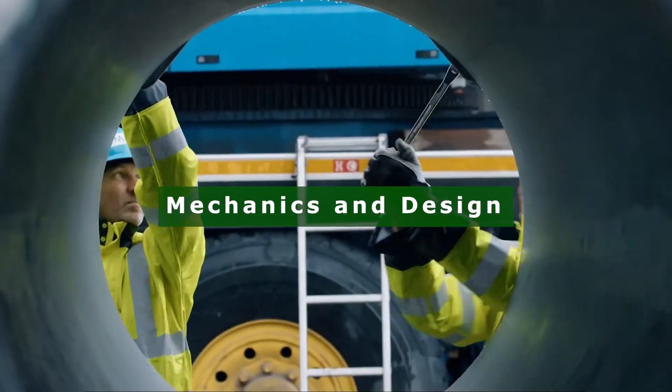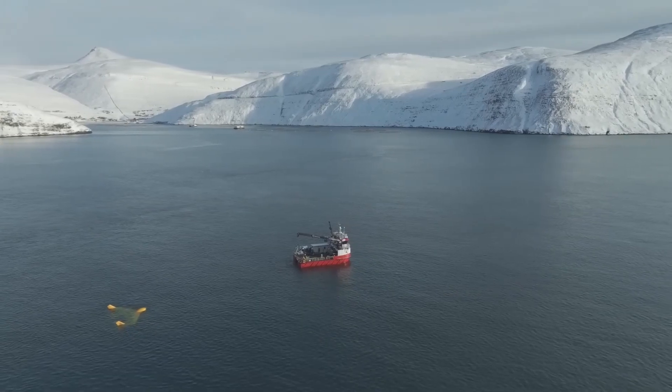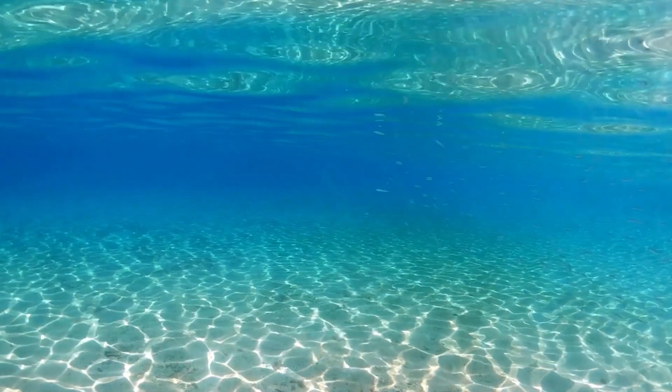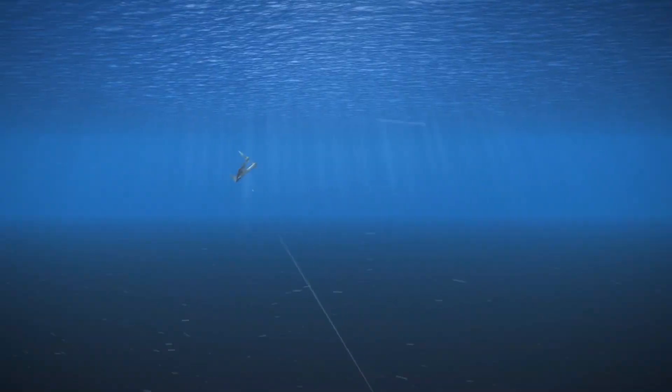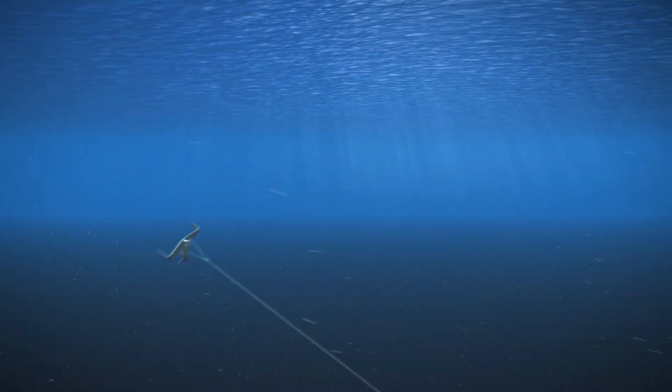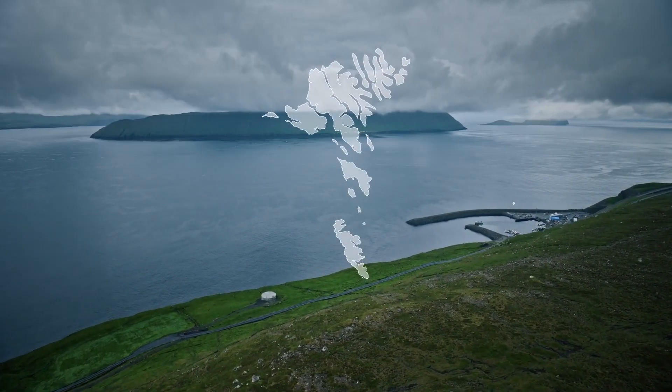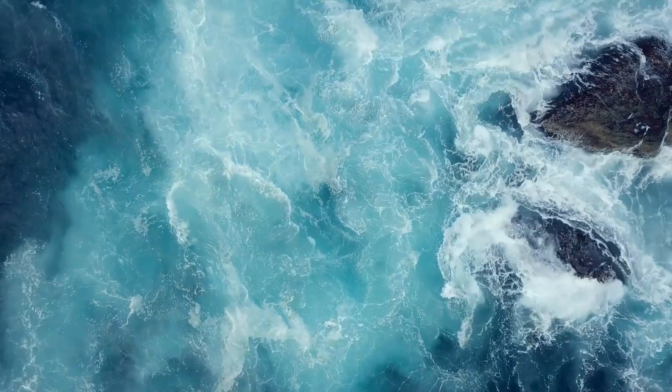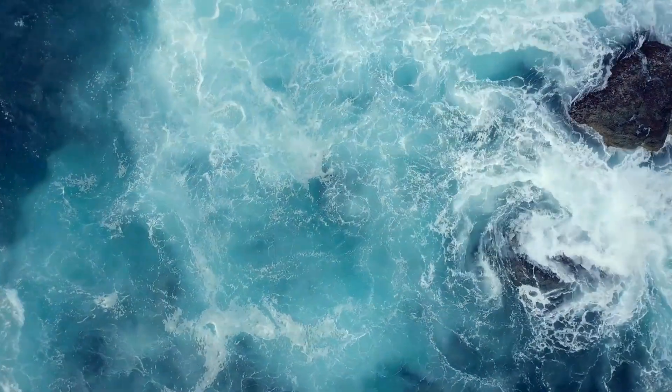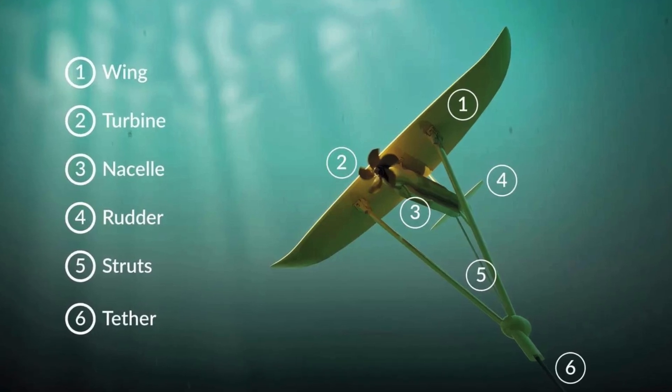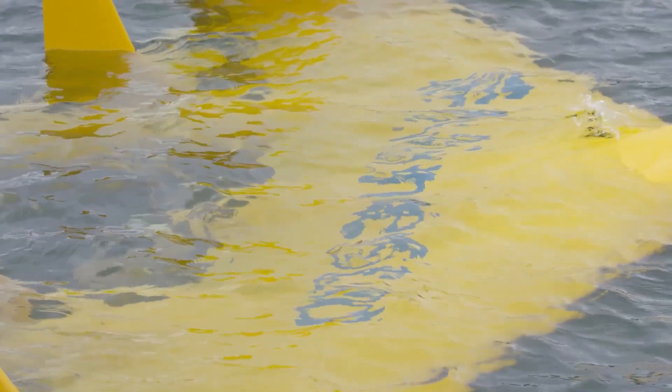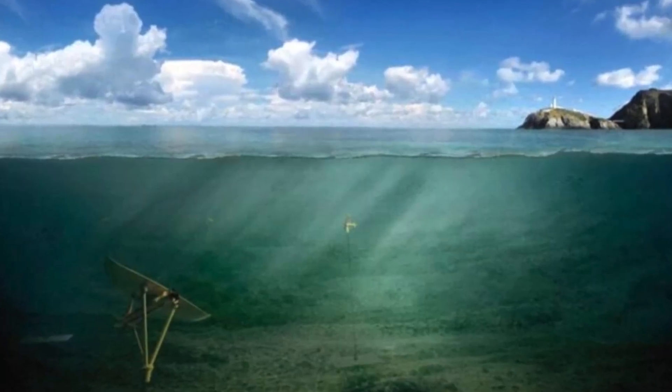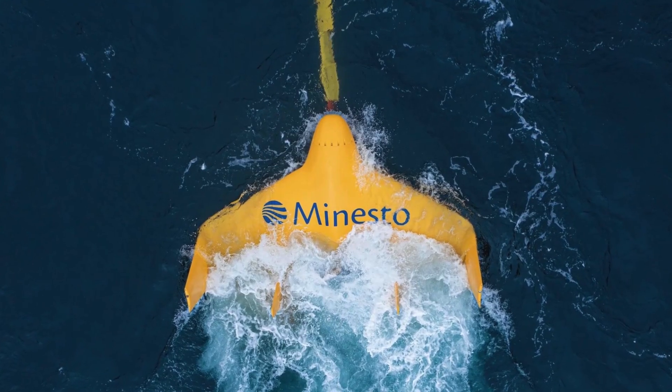The Deep Green technology operates efficiently in water velocities between 1.2 meters per second and 2.4 meters per second, and at depths ranging from 60 meters to 120 meters. This makes it suitable for a wider range of locations compared to traditional tidal energy devices, which often require faster currents to be effective. The key components include the kite, designed to maximize the hydrodynamic lift force created by underwater currents, propelling it through the water much like a glider in the air.